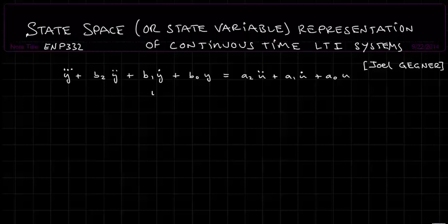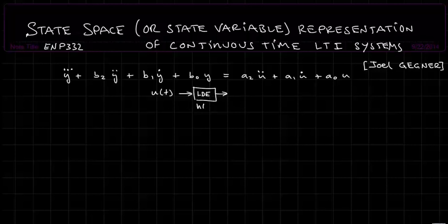I've left off the independent variable t, but these are functions of time. We could draw a signal u of t that enters our LTI system, which could be represented by our linear differential equation — we could have h of t, h of s, and so forth — with the output y of t.